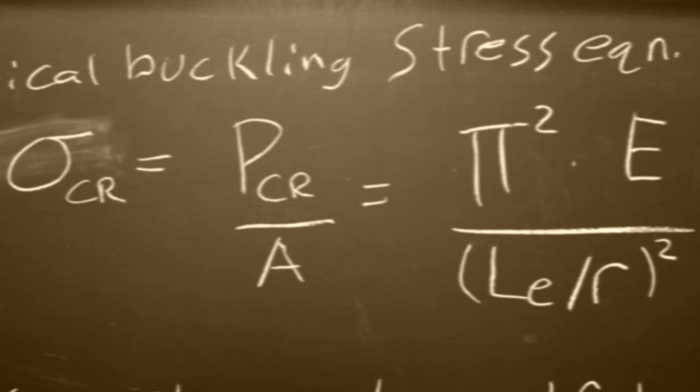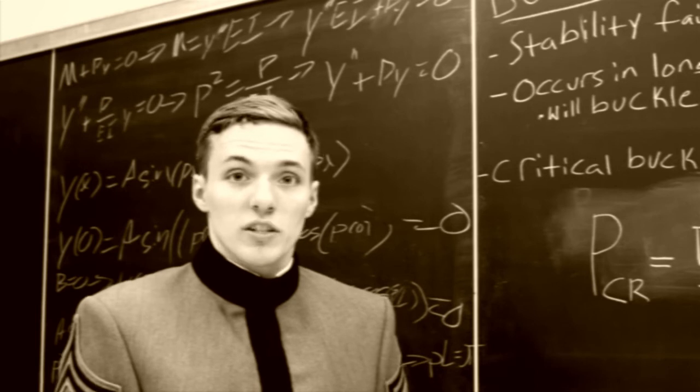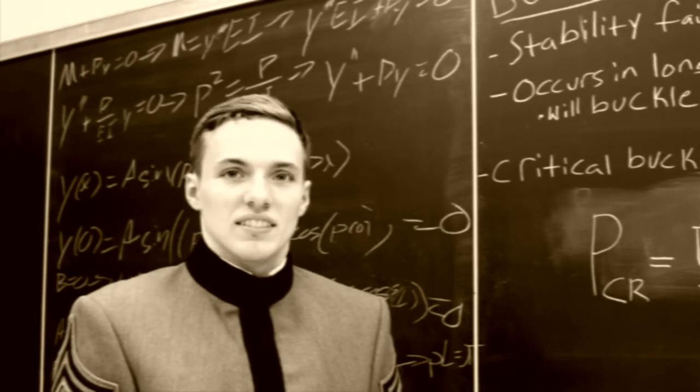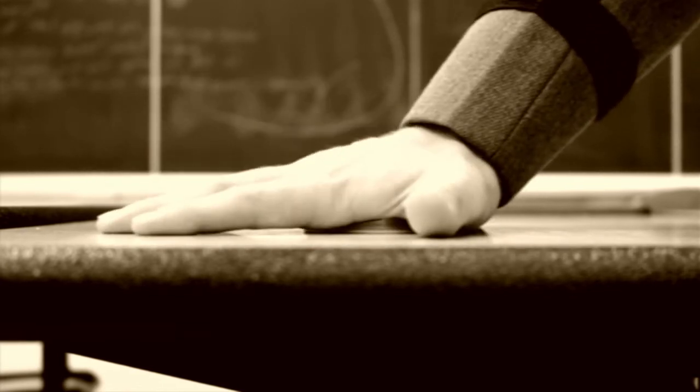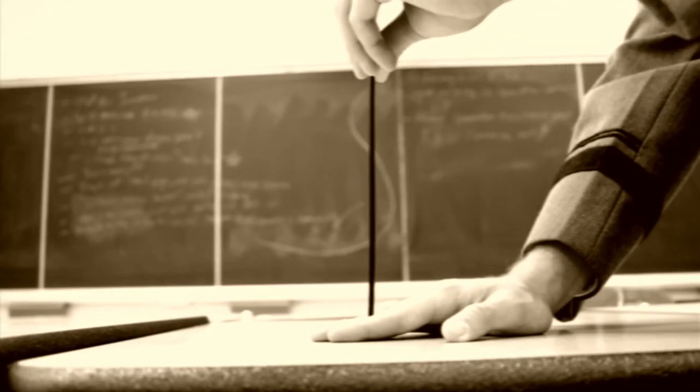If either the critical buckling load or stress are passed, the beam will fail. Columns always buckle? No, Johnny. If the buckling critical stress is larger than the yielding stress of the material, the column will crush. Otherwise, it will buckle.